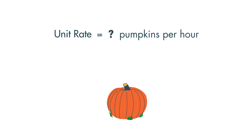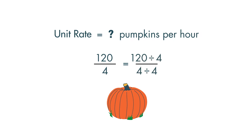To find the number of pumpkins the farmer can harvest in one hour, we will divide the total number of pumpkins, 120, by the number of hours it took to harvest them, 4. 120 divided by 4 is equal to 30, and 4 divided by 4 is equal to 1.